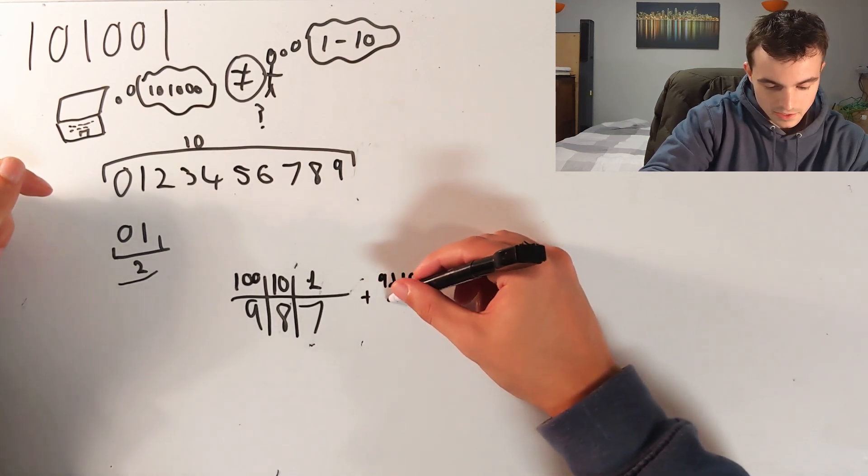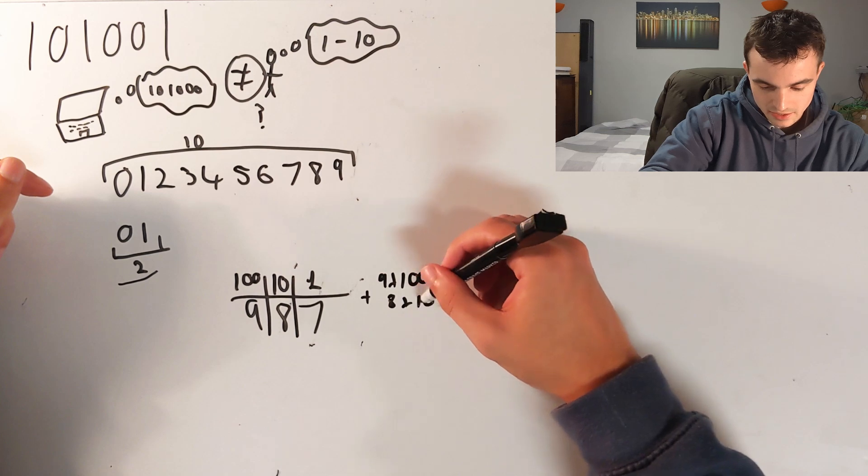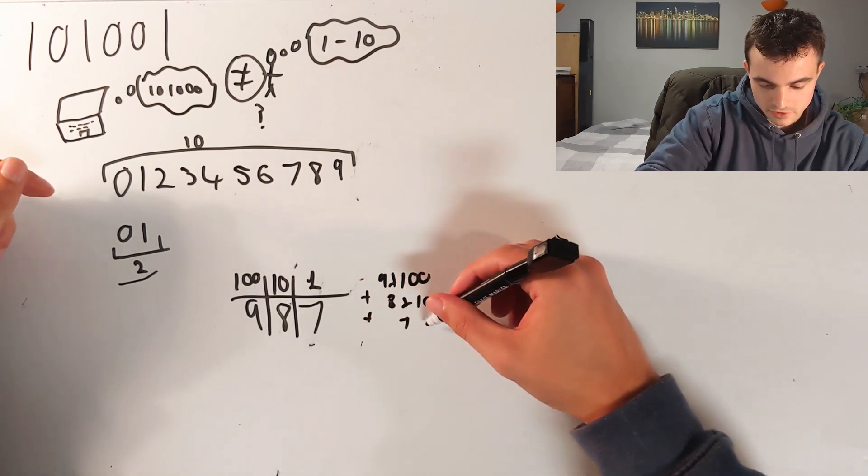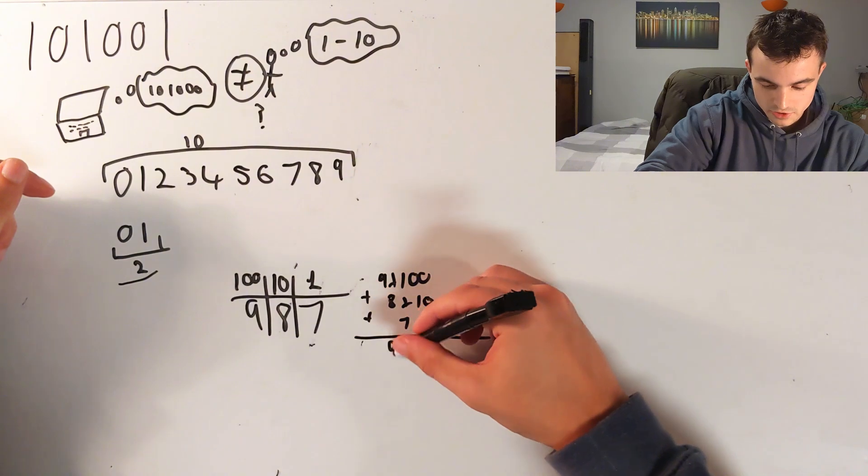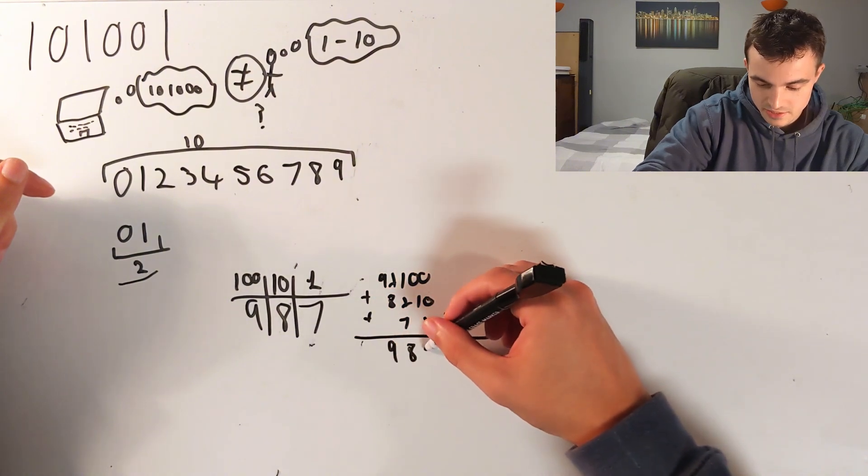So it's the same as saying nine times one hundred plus eight times ten plus seven times one, which equals nine hundred and eighty-seven.